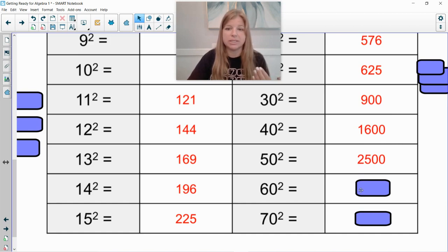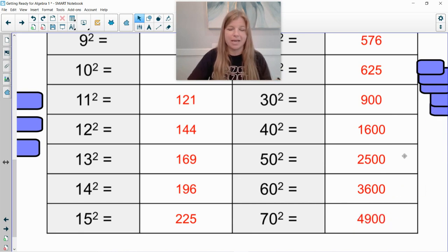60 squared, 6 times 6 is 36. So it's 3600. And then 70 squared, 7 times 7 is 49. And it would be 4900, and so on. The pattern would just continue. I hope this video was helpful. Thank you so much for watching. Bye.